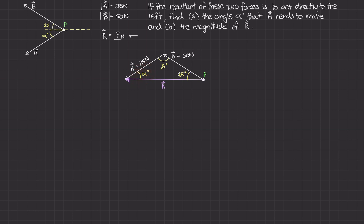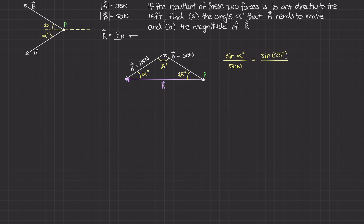We could use the law of sines to do just that. I'm going to use angle alpha and its opposite side, and also angle 25 and its opposite side. So: sine of alpha over the opposite side to alpha, which is vector B at 50 newtons, equals sine of 25 degrees over its opposite side, which is vector A at 35 newtons. This equation has only one unknown, alpha. Solving for alpha gives us alpha equals about 37.14 degrees. That is our solution to part A.